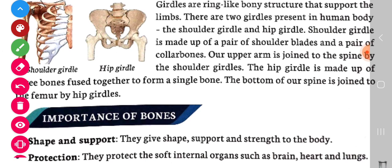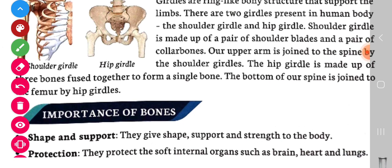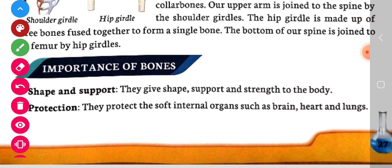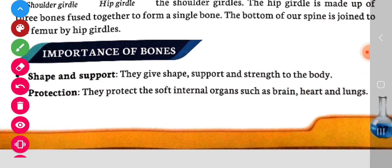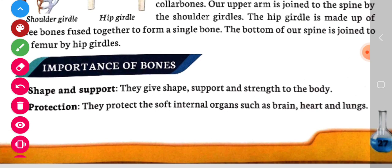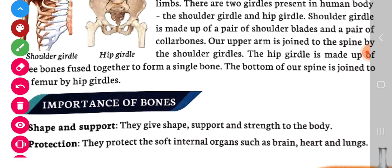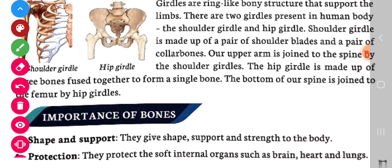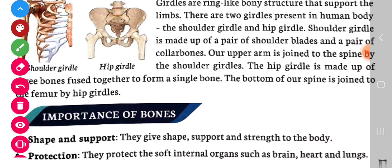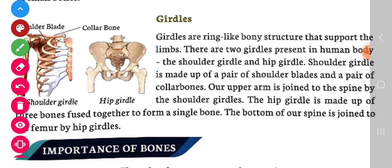The shoulder girdle is made up of a pair of shoulder blades and a pair of collar bones. Our upper arm is joined to the spine by the shoulder girdle. The hip girdle is made up of three bones fused together to form a single bone. The bottom of our spine is joined to the femur by the hip girdle.